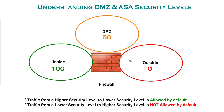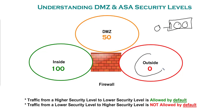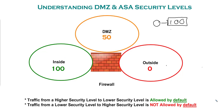How does a firewall know which interfaces are trusted and which are not? You dictate it via a security level from 0 to 100 — the higher the level, the more trusted the interface. As shown in this example, the outside interface is the untrusted interface and the inside interface is the trusted one. Now that you understand how the ASA determines zones based on security levels, what is the DMZ in all this?